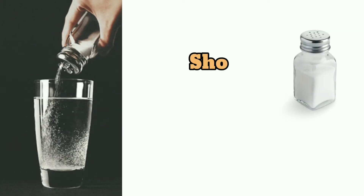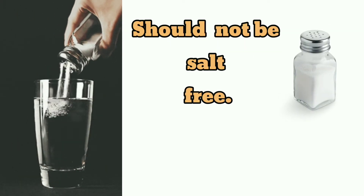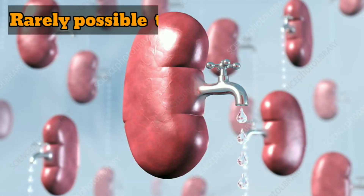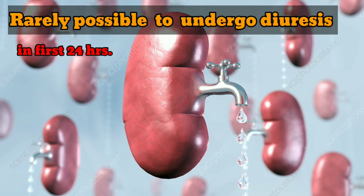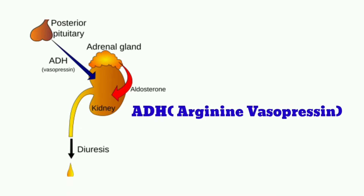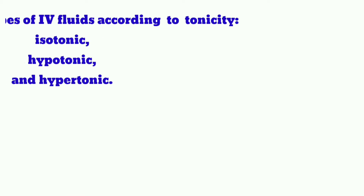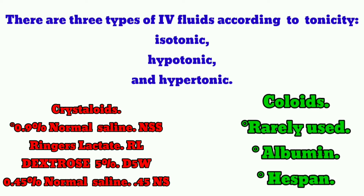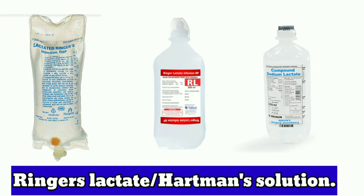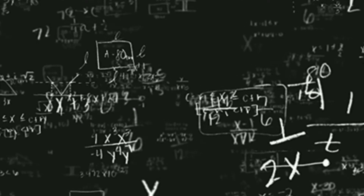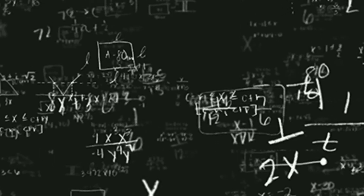If oral fluids are to be given, they should not be salt-free — salt should be added. It is possible to undergo significant diuresis in the first 24 hours due to stress hormones present, so it is appropriate to oral-rehydrate with a solution such as Dioralyte. Three types of fluids are normally used: the most common is Ringer's lactate or Hartmann's solution; other fluids like human albumin solution, fresh frozen plasma, and hypertonic saline may also be used.